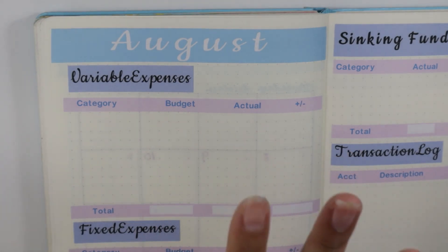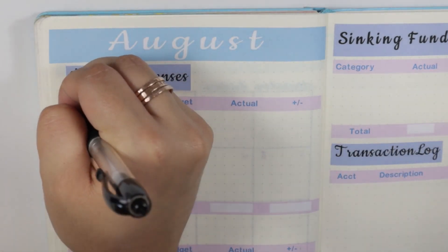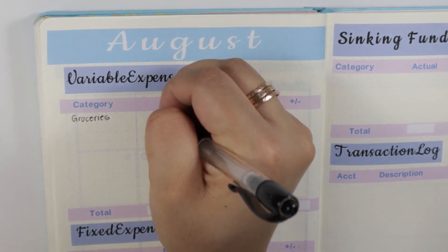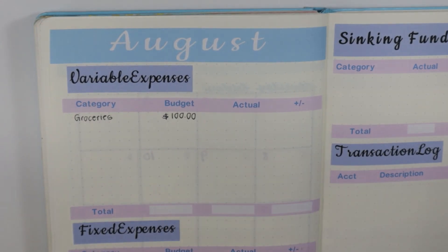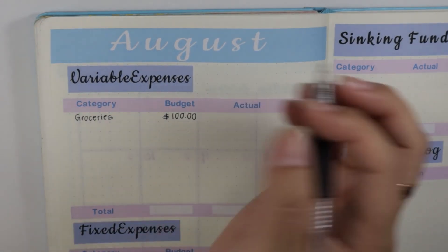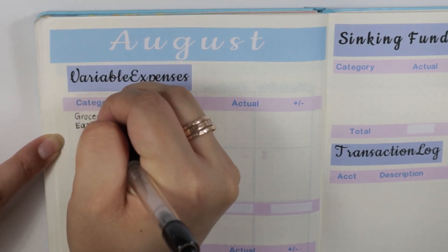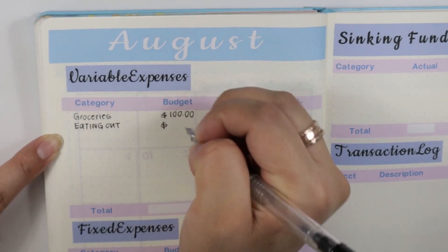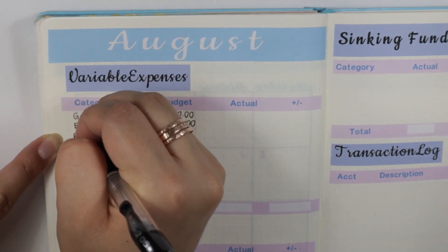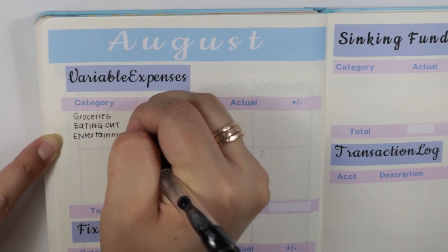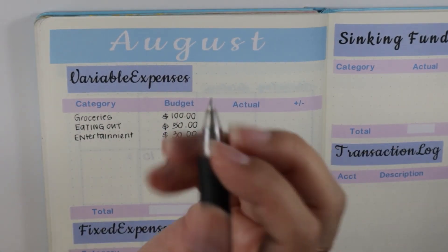Starting off with variable expenses — these are the categories that can probably change, but for this month I am keeping it very similar to my July budget. The first category is groceries, that's going to get $100. Eating out is next, that is going to get $50. Entertainment is going to get $30. Fun is going to get $120.